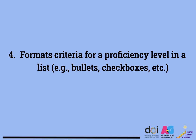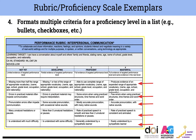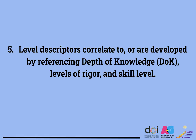Formats criteria for a proficiency level in a list. In order to meet this expectation, a teacher is going to have to think through stylistic and practical choices based on how they envision their students making use of this tool. For example, we have a teacher who has used bullets and a teacher who has used check boxes. In another example, the teacher has used rows and check boxes. Level descriptors correlate to or are developed by referencing depth of knowledge, levels of rigor, and skill level.